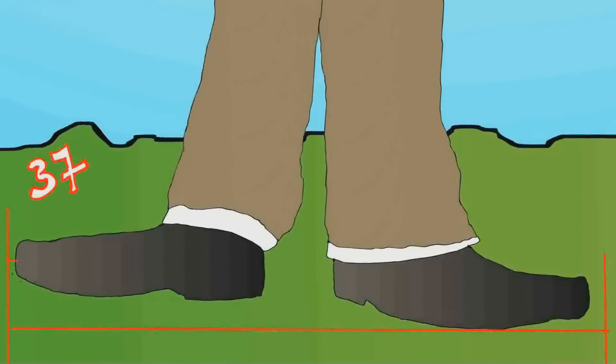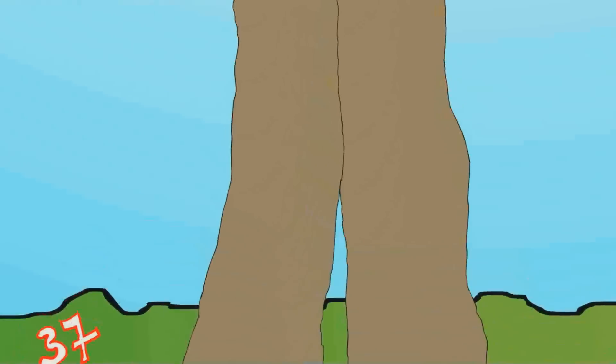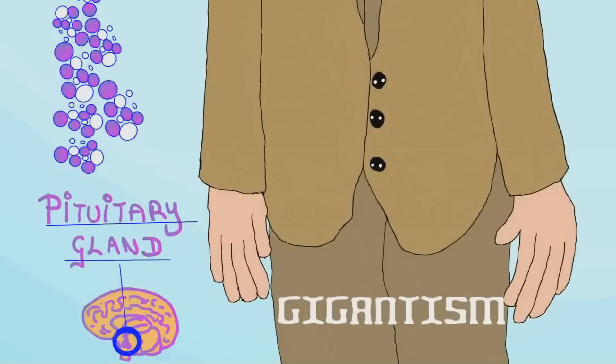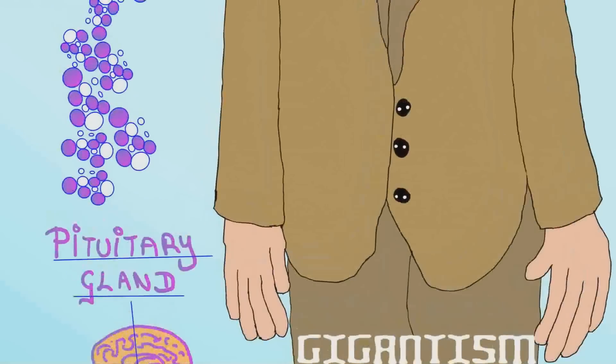Most of the tallest people in the world have a pituitary gland disorder and this is known as gigantism. They end up not being very healthy at all and usually die at an early age.